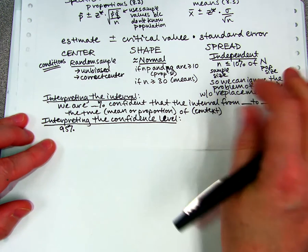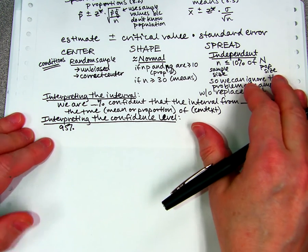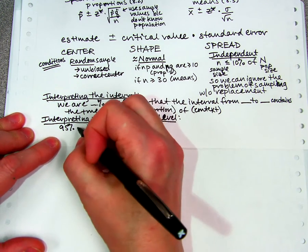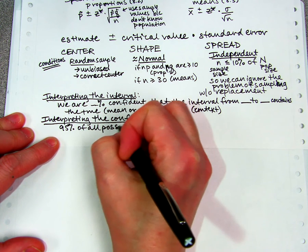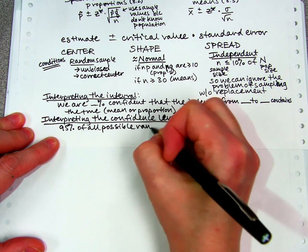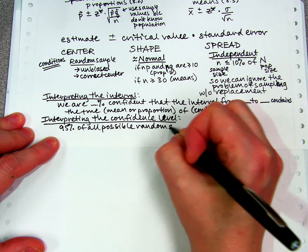...would be talking about if we did this many times, this is how often we would capture it. So 95% of all possible random samples from this population...